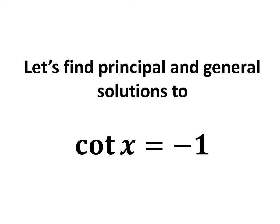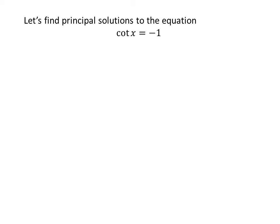In this video, we will learn to find the principal and general solutions to the equation cotangent of x is equal to minus 1. Let us first find the principal solutions. We know the solutions to the trigonometric equation for which x is greater than or equal to 0 and less than 2 times pi are the principal solutions.